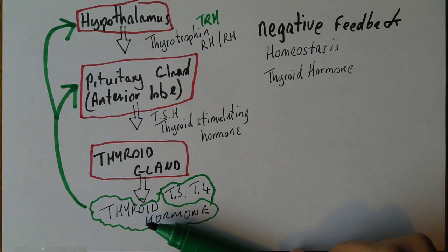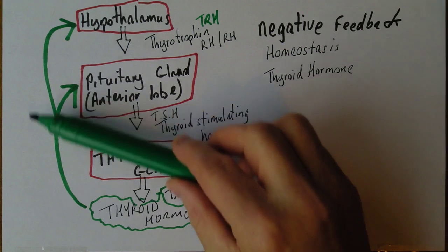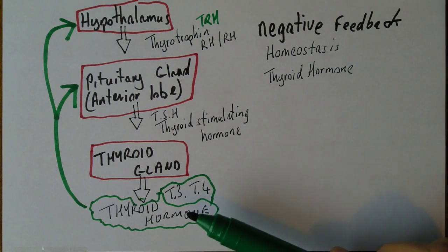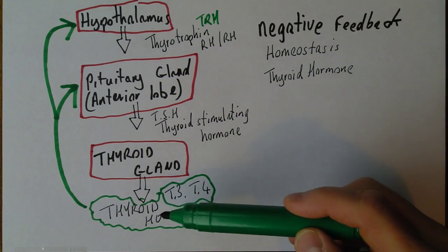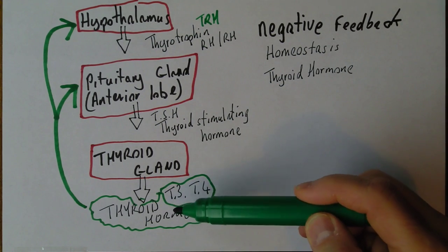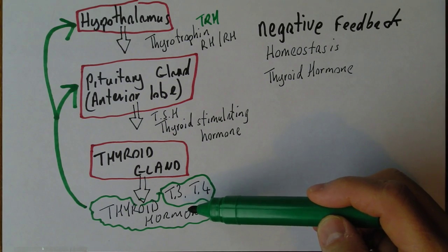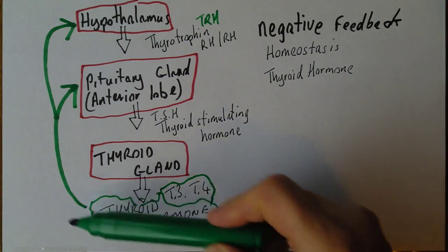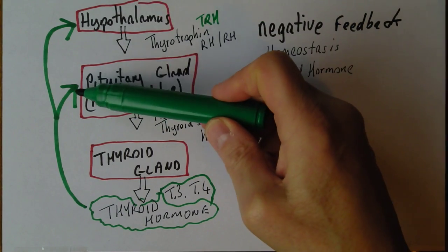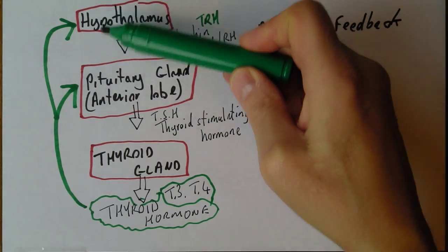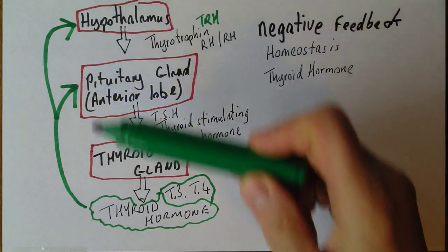This is all called a negative feedback system because the end product — in this case thyroid hormone — is inhibiting the release of its own releasing factors.